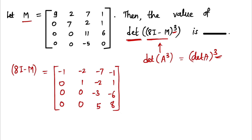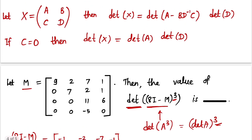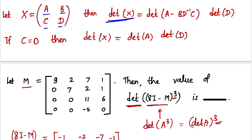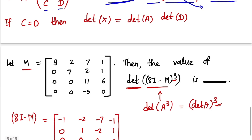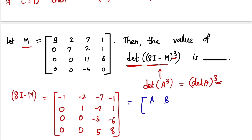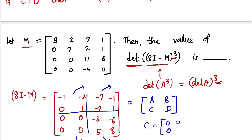Now I have a result to find the determinant of this matrix. Suppose we have a block matrix X of the form A B / C D where A, B, C, D are block matrices. Then determinant of X equals determinant of (A minus B times D-inverse times C) times determinant of D. This requires that D is invertible. In our case, we write the matrix in this block form, identifying A, B, C, and D.